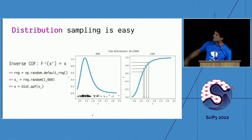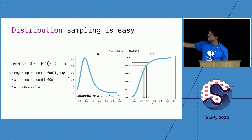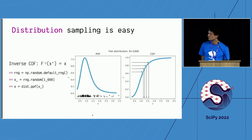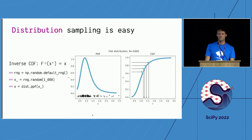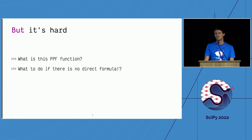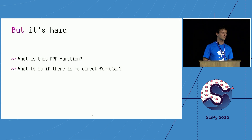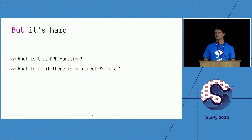This is how you can do it in NumPy: you have your generator, you sample F or X 1000 times, and then you call the PPF — the percent point function. But it can be hard because what is this PPF function, and what happens if you don't have access to it? If the distribution you're trying to sample doesn't have one, you either need to write it yourself, find one, or interpolate something. So it can be complicated.